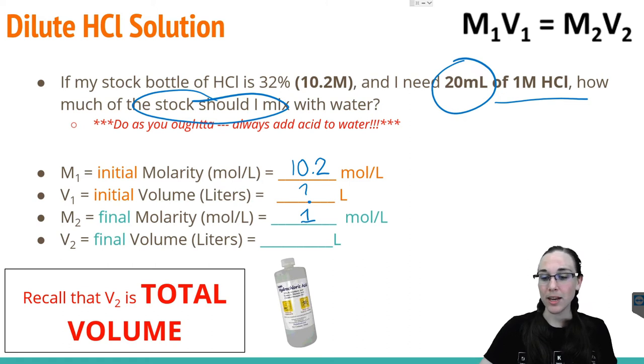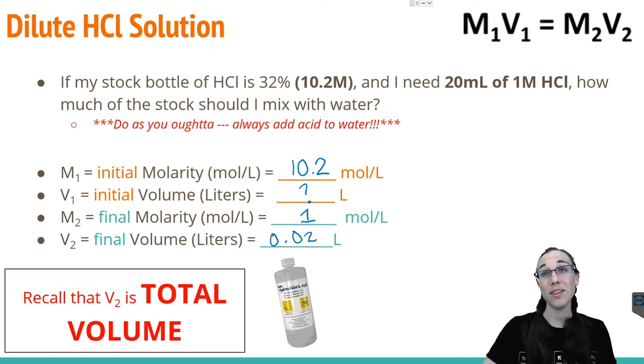However, in our equation, we need to convert our milliliters to liters before we can plug this value in. So if we convert that, we just need to move the decimal back three spaces, and we have 0.02 liters as our final volume. The only thing left to do now is plug and chug into our equation.